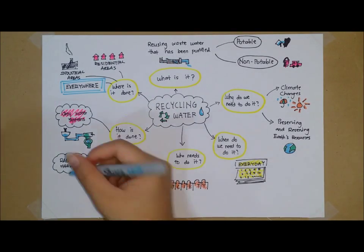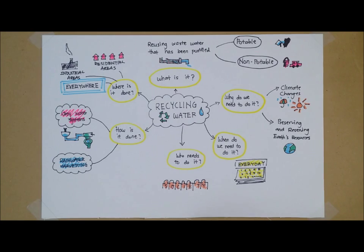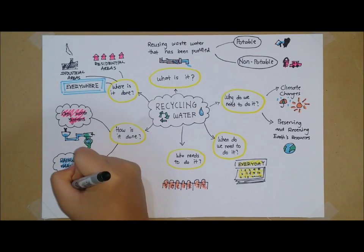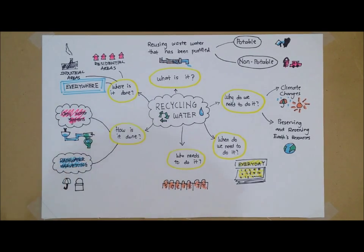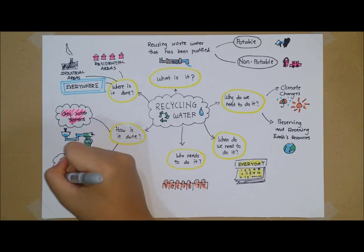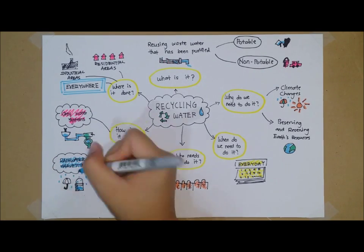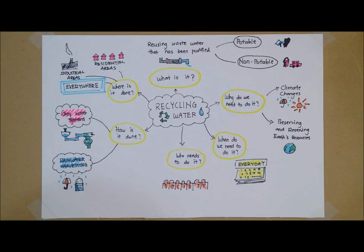Another method is rainwater harvesting. Rainwater can be collected and reused rather than allowing it to run off. Collected rainwater can be used for watering gardens, washing cars, and domestic use with proper treatment.